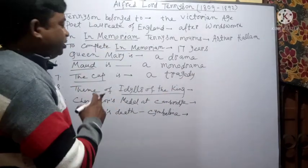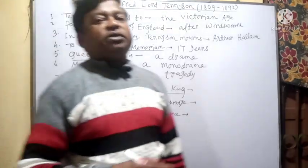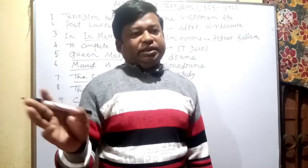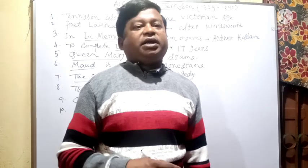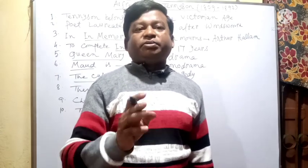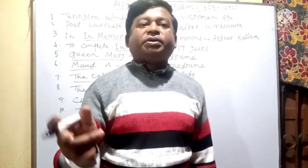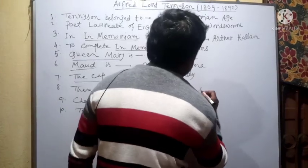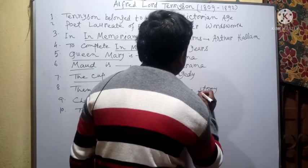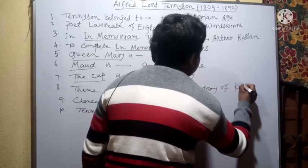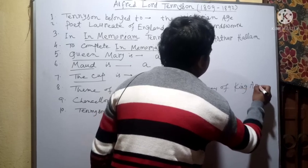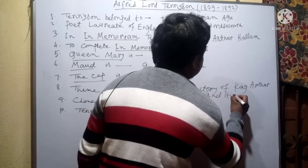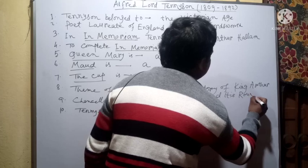Next question, question number 8: What is the theme of Tennyson's Idylls of the King? The answer is: The theme of Tennyson's Idylls of the King is the story of King Arthur and his Round Table.